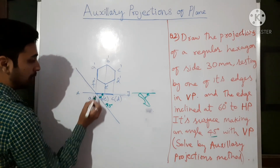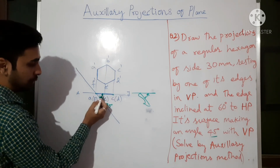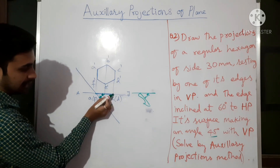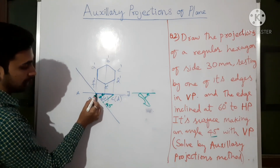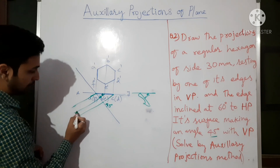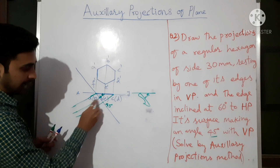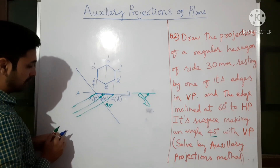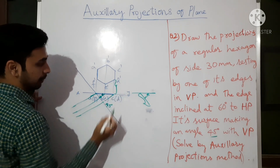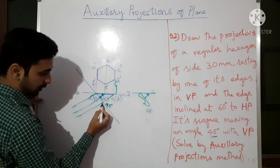For the front view, project the points onto this new XY line such that the projector meets the line at 90 degrees — the projector and the line must be perpendicular. Extend the projectors beyond the line. The angle here is 45 degrees as marked. Now measure the distances — point D's distance from the old XY line.